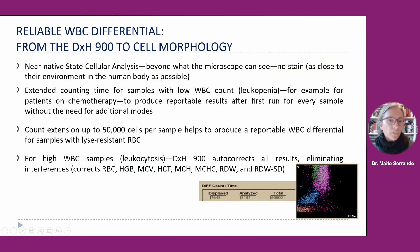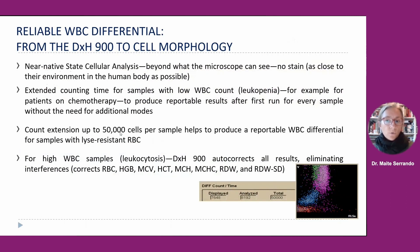Near-native state cellular analysis means there is no need for stains — we are analyzing cells as close to the environment of the human body as possible. Extended counting time for samples with low white blood cell count, for example in patients under chemotherapy or other situations, reduces reportable results needed after the first run. We have extended counting up to 50,000 cells per sample, which helps produce and report accurate white blood cell differential results. For high white blood cell samples, such as leukocytosis, we have autocorrection for all results, eliminating the need for reruns or interferences.